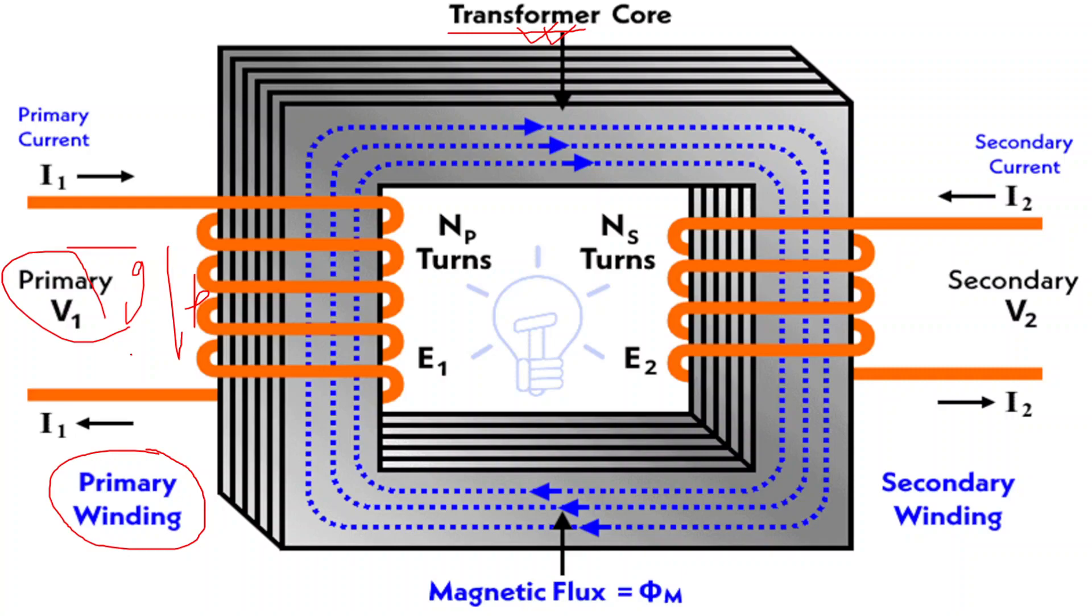When an alternating current AC flows through the primary coils, it generates a magnetic field. Similarly, we have the secondary winding. This is the output side of the transformer where the load is connected.